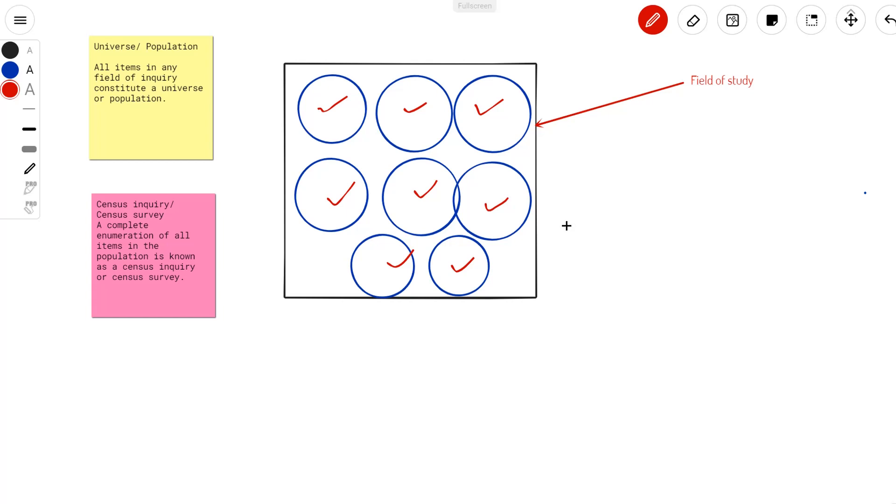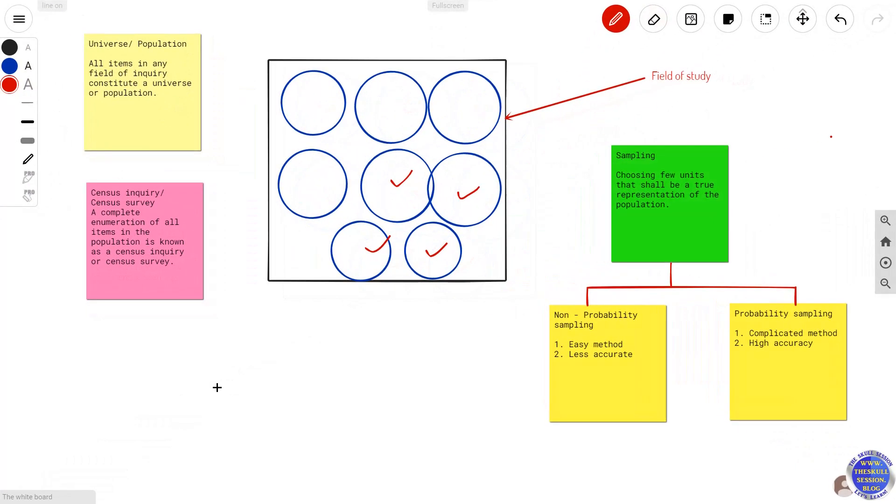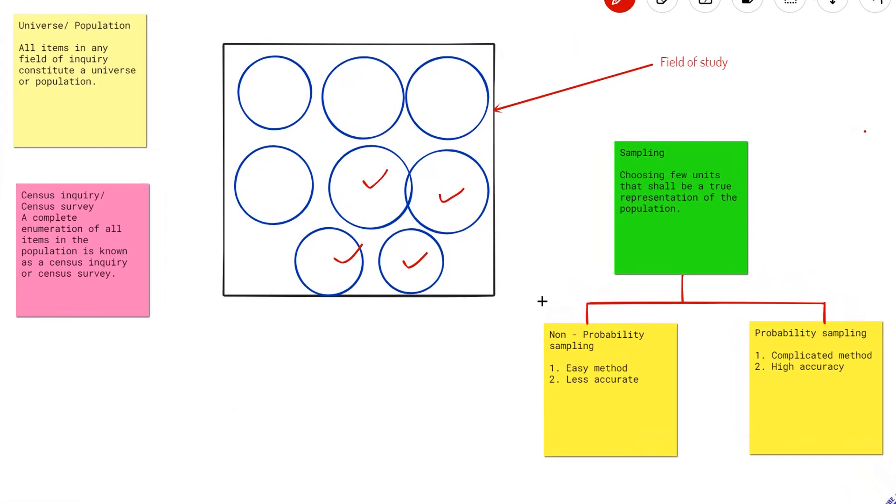That is why the concept of sampling exists. Sampling refers to a situation wherein we will only choose certain units from the entire population, and these few units should become a true representation of the population. For example, out of these eight units, if we are only choosing four units, then what you are doing is called sampling.